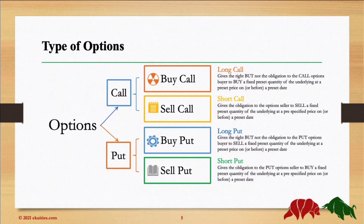We have mainly two types of options: call option and put option. When you buy a call or a put, you have the right to buy the underlying if it was a call, or to sell the underlying if it was a put, at a predefined quantity at a predefined price — called the strike price — on or before a predefined date. If you sell options, call or put, you have the obligation to sell the underlying if you sell a call, and to buy the underlying if you sell a put, again at the same predefined quantity, predefined price, on or before a predefined date.